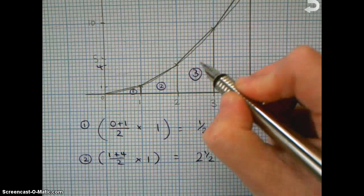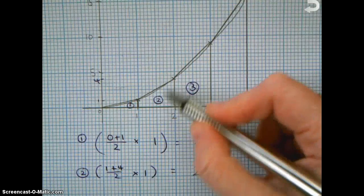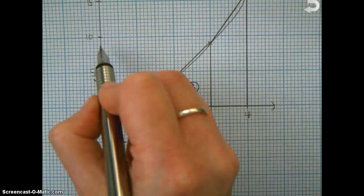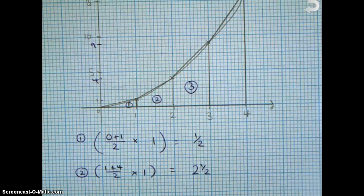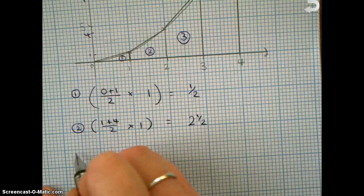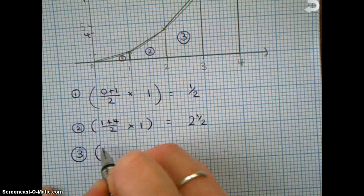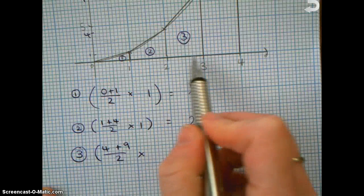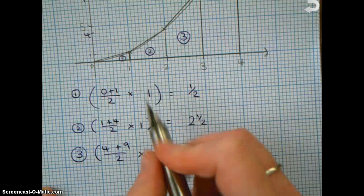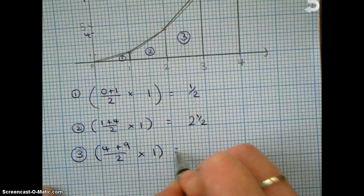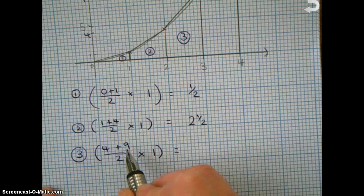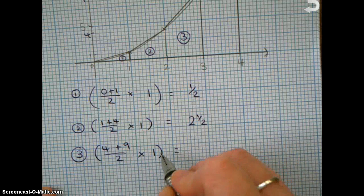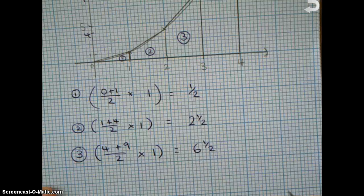Do the same for trapezium 3. This height's 4, this height up to here is now at 9. So that rule for trapezium 3 is going to be 4 add 9, divided by 2, times the height of all of these trapeziums are 1, aren't they? Because it's the width between our spacings. So 4 add 9 is 13, divided by 2 is 6 and a half, times 1 is still 6 and a half.